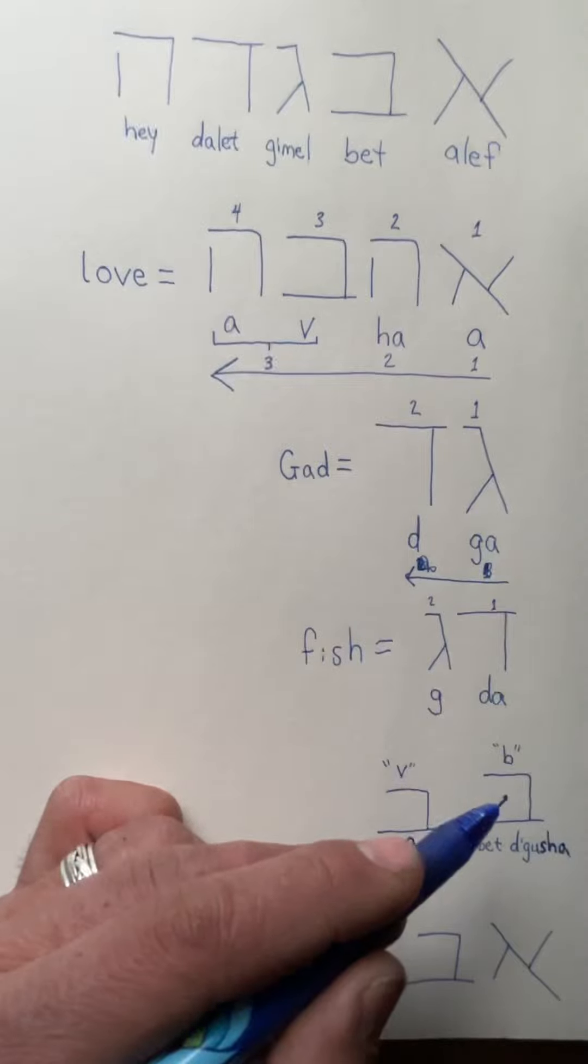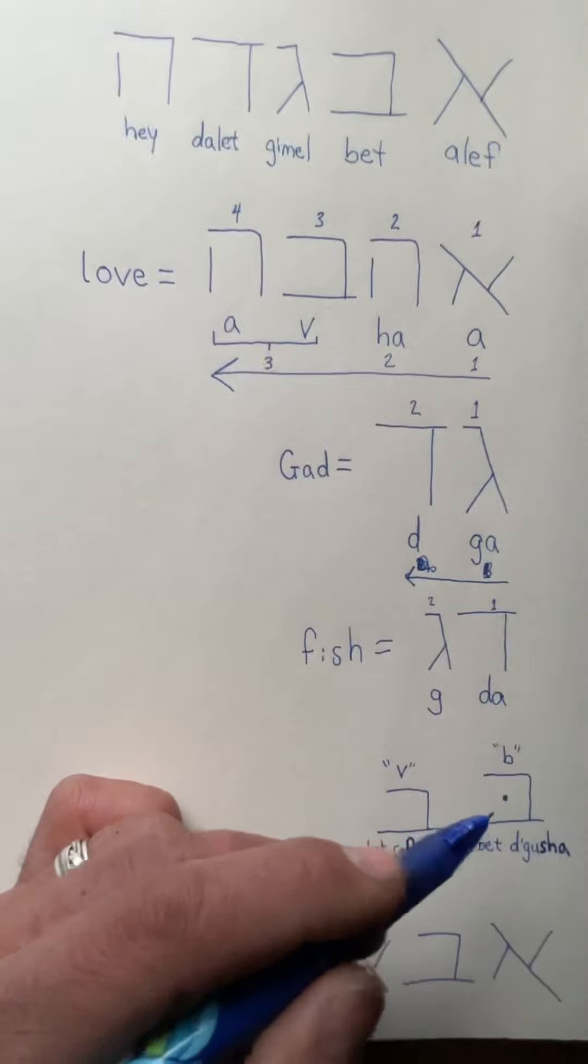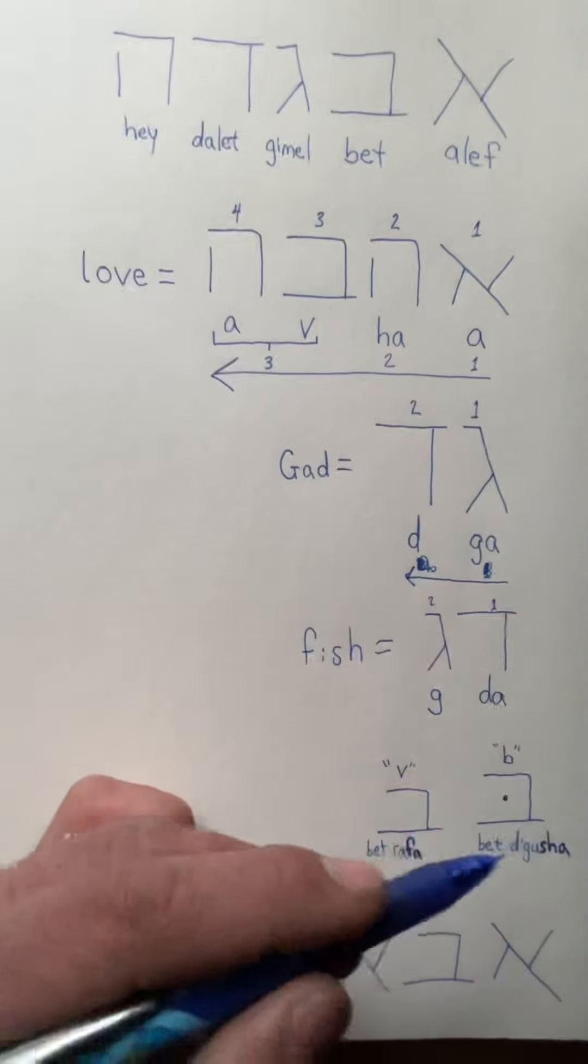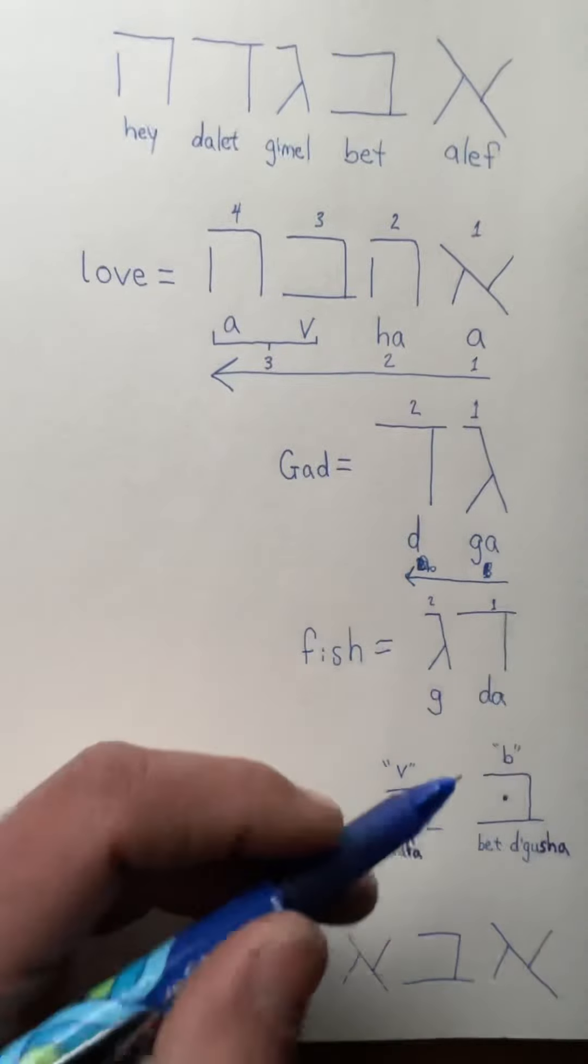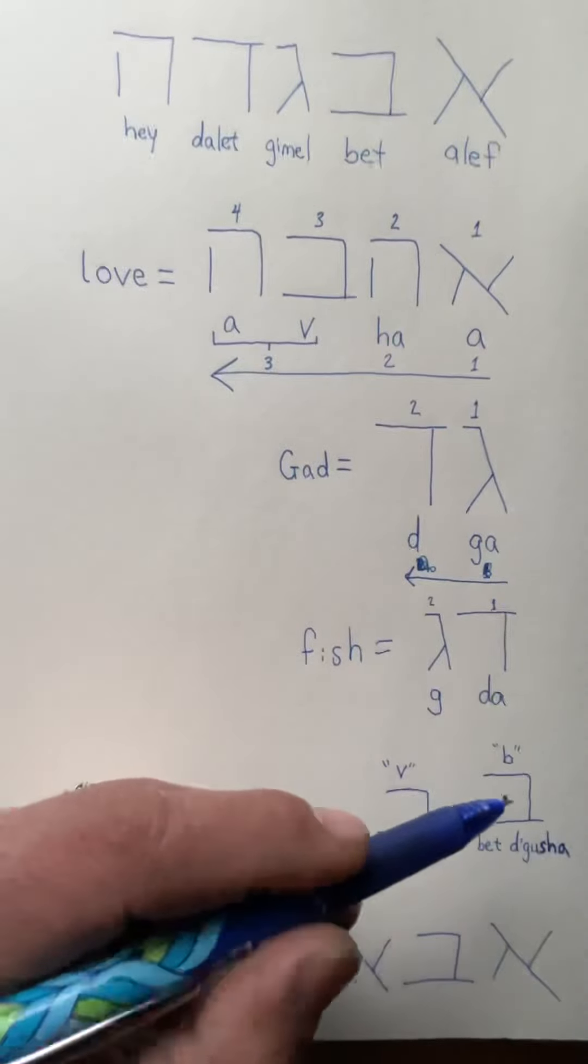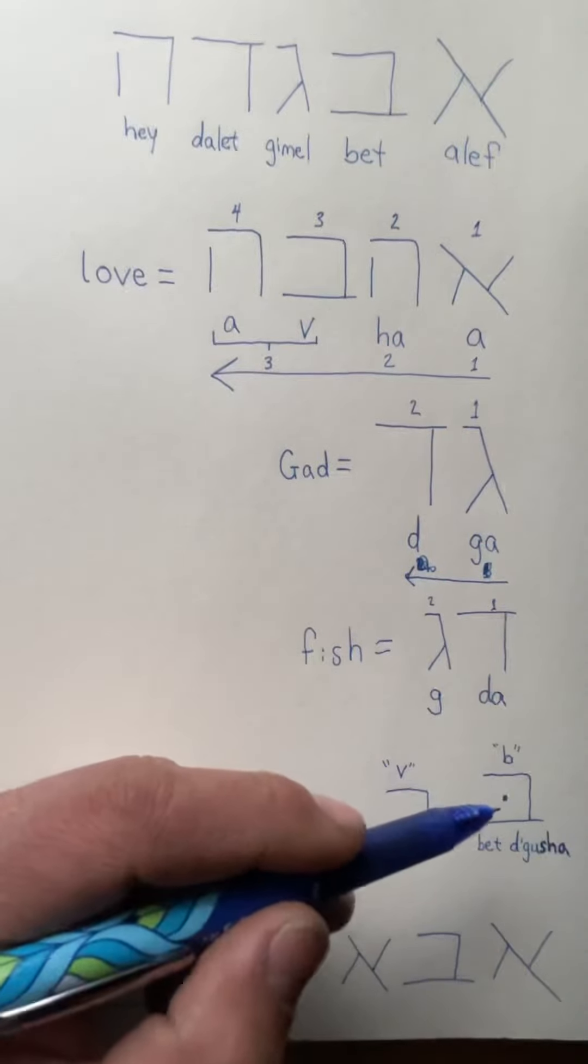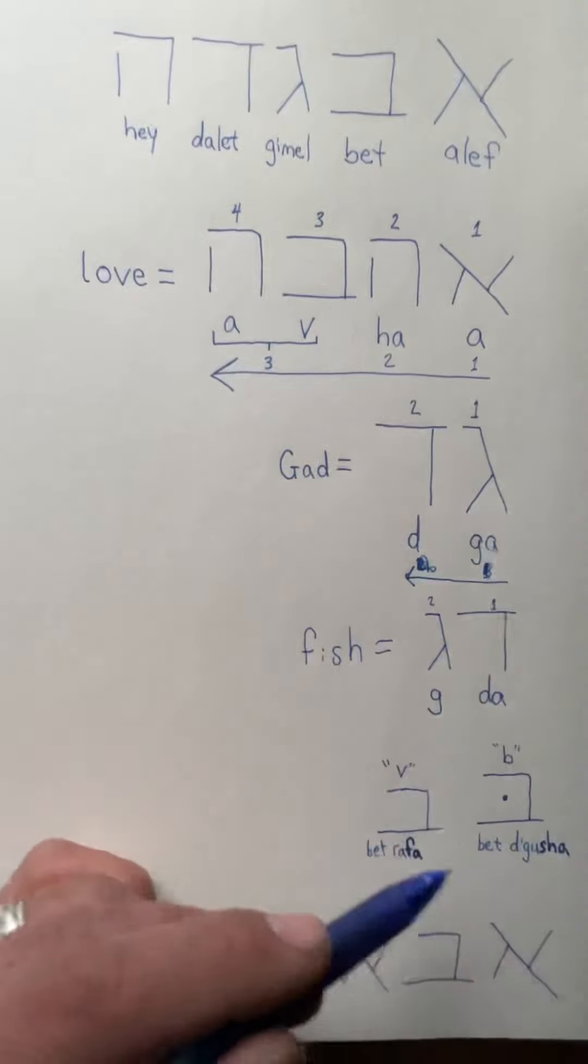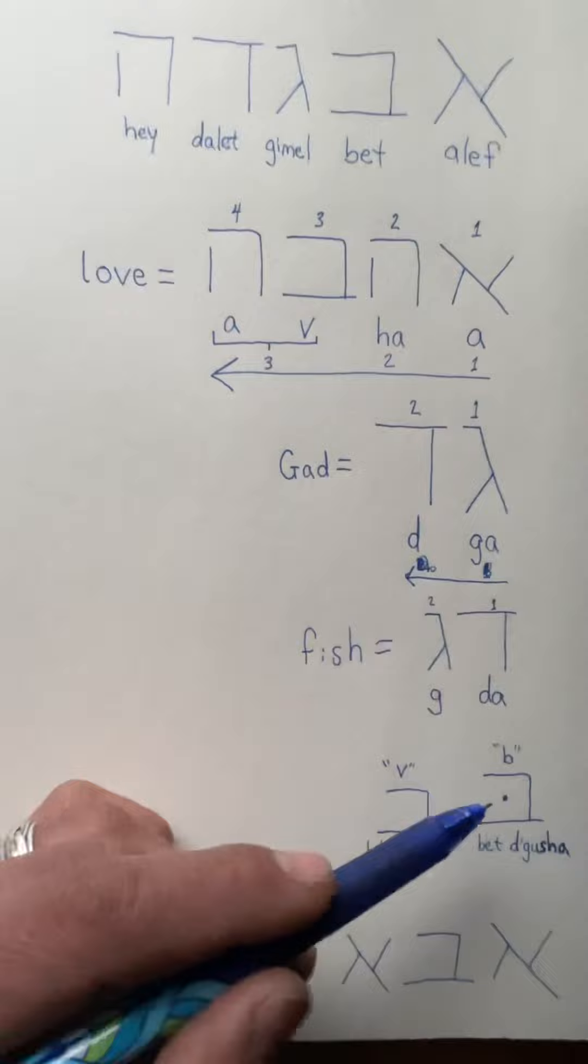There's a nikud, a helper symbol - in English we call these diacritics. It's not the actual alphabet, but it's just a helper symbol to help you when you don't know a word to learn the pronunciation. This dot, if it shows up in a bet when you're writing with helper symbols, we call this bet dagesh.